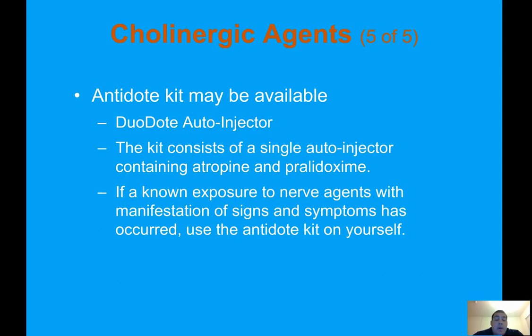An antidote kit may be available — the DuoDote auto-injector consists of a single auto-injector containing atropine and pralidoxime. If a known exposure to nerve agents has occurred with manifestation of signs and symptoms, use the antidote kit on yourself first.